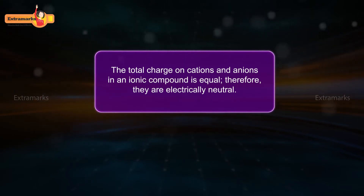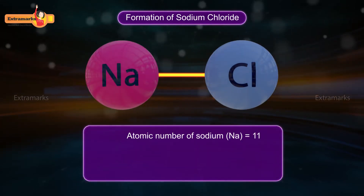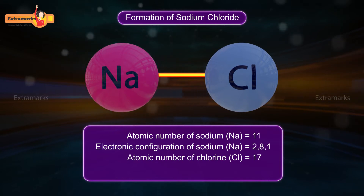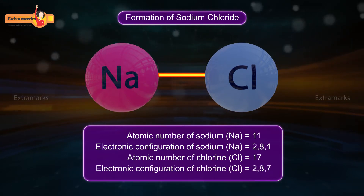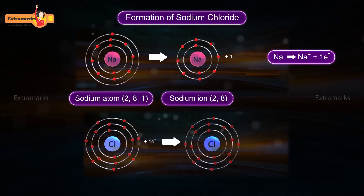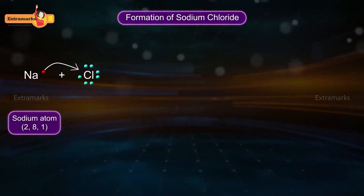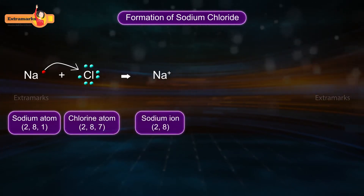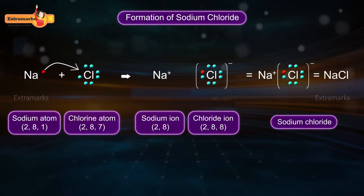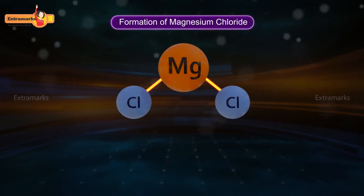The compounds formed from cations and anions are called ionic compounds. The total charge on cations and anions in an ionic compound is equal, therefore they are electrically neutral. The atomic number of sodium is 11 and its electronic configuration is 2, 8, 1. The atomic number of chlorine is 17 and its electronic configuration is 2, 8, 7. Sodium loses its one valence electron and attains the nearest noble gas configuration, while chlorine atom gains one electron and attains the nearest noble gas configuration, forming a sodium ion and a chloride ion. The ionic bond is formed between the sodium ion and chloride ion.